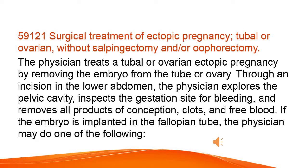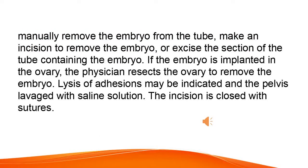If the embryo is implanted in the fallopian tube, the physician may do one of the following: manually remove the embryo from the tube, make an incision to remove the embryo, or excise the section of the tube containing the embryo. If the embryo is implanted in the ovary, the physician resects the ovary to remove the embryo.